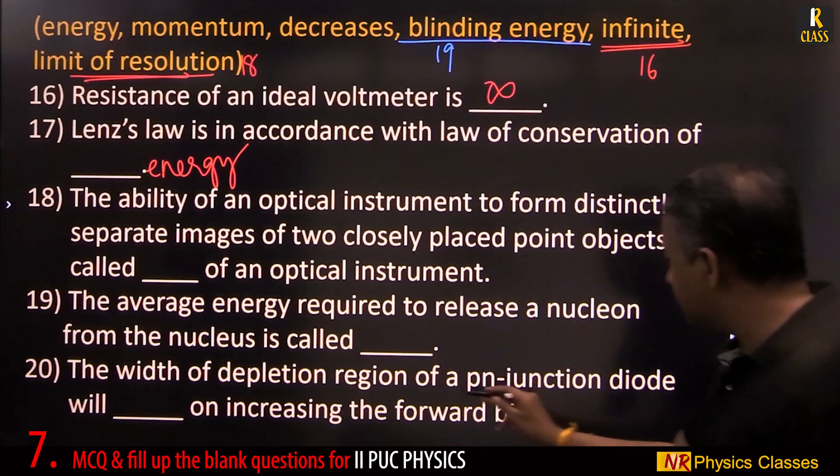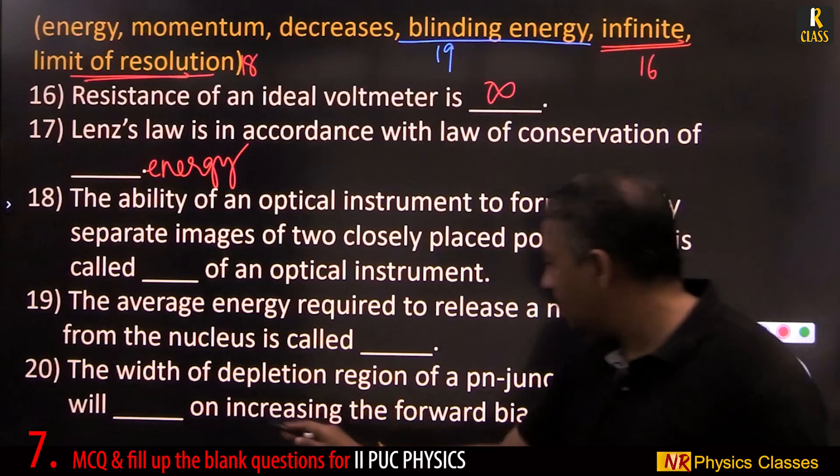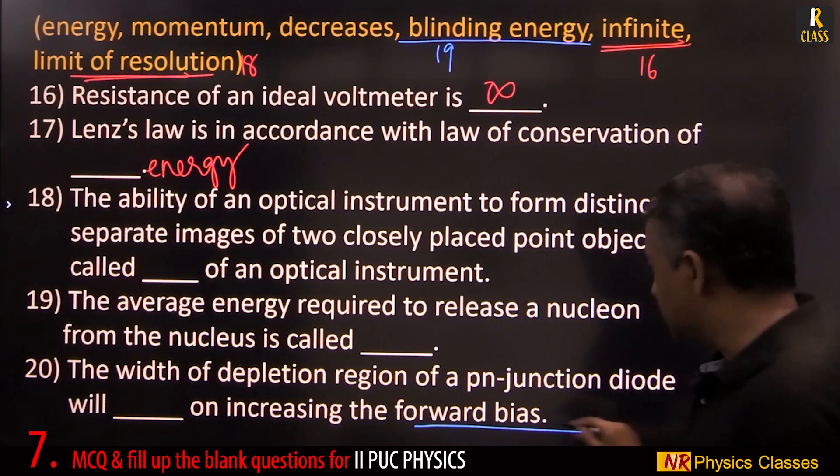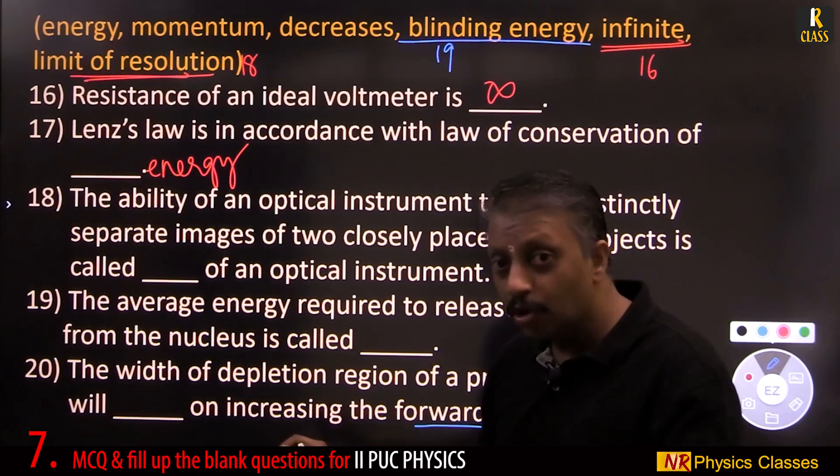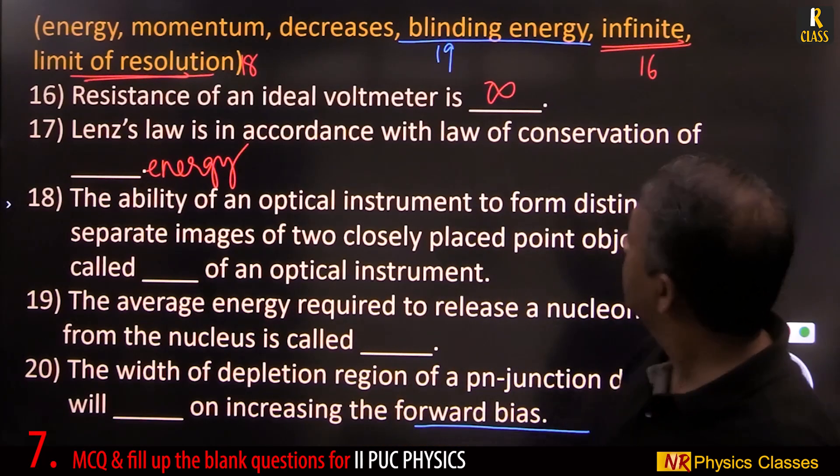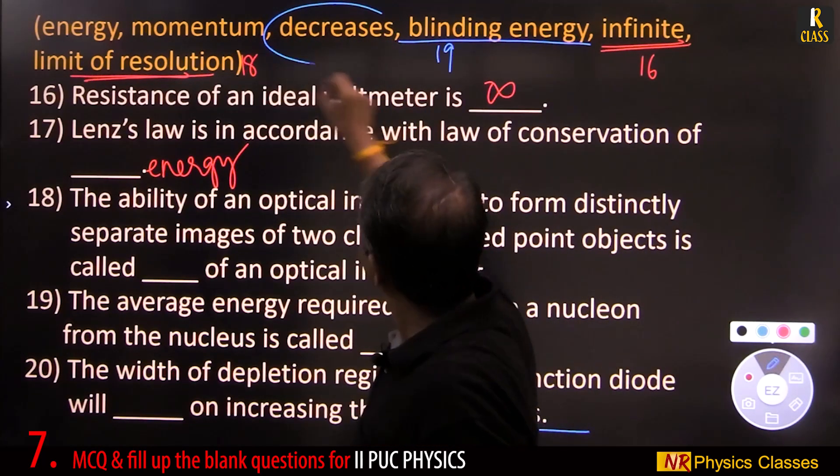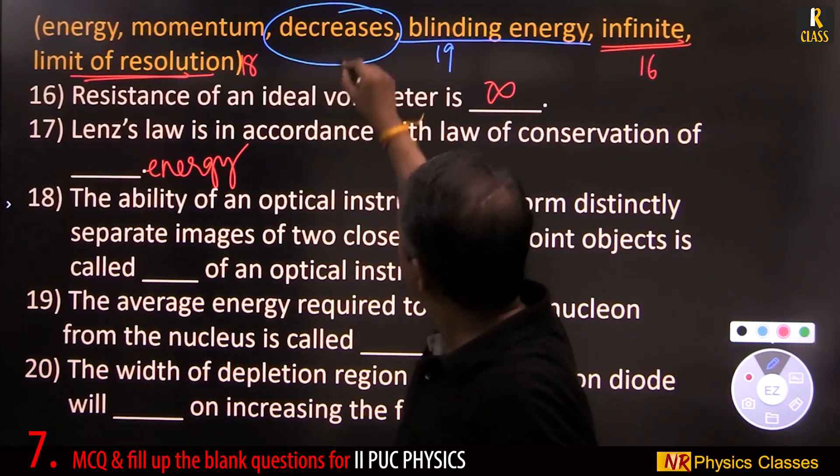The width of depletion region of a p-n junction diode in forward bias. Forward bias, when voltage is increased, width decreases. This is 20th.